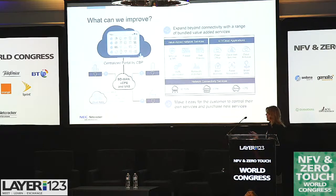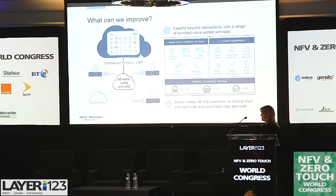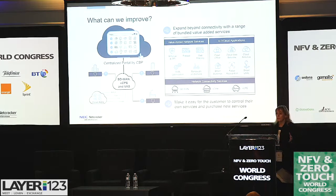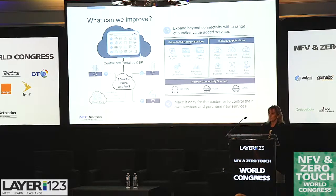So how do we improve on that? We want to be able to add more value-added services to the offer. Those value-added services can be security applications, bandwidth on demand, web optimization — there are lots of different types. But why stop at network services? You've also got cloud applications going into the enterprise. Why not offer them Microsoft Office 365? Why not offer them Google Workspace? Why not offer them cloud unified communications? There's a whole range of services you can bundle in.